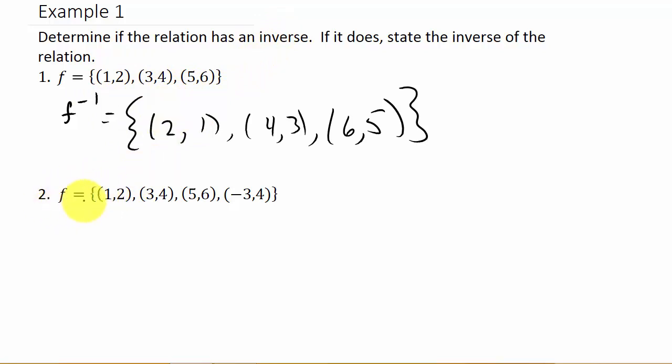Alright, so let's look at number two. So here we have f is this set of ordered pairs. So I go through here and I look. Do I have the same y value anywhere with two different x values? So to find the inverse, do I have the same y value with two different x values?